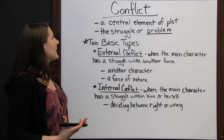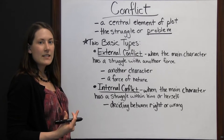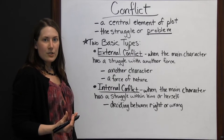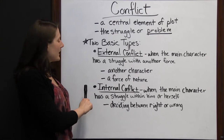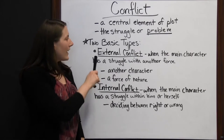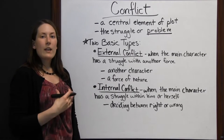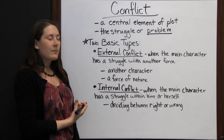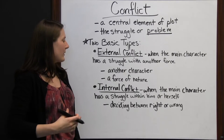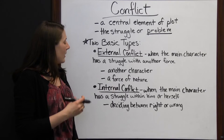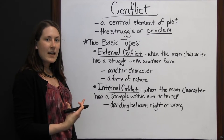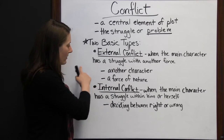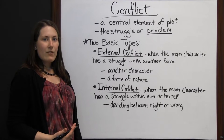Whenever you're looking at conflict — whenever you're trying to find what that conflict is in a story — look at what the main problem is. To delve deeper and better understand the conflict, ask yourself if it's an external conflict or an internal conflict. Remembering that external is going to be when a character is struggling with another force, something outside of him or herself — another character or a force of nature. An internal conflict is when the main character has a problem within him or herself. A good example is deciding between right and wrong.